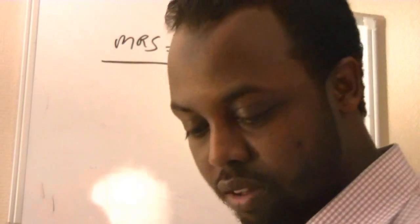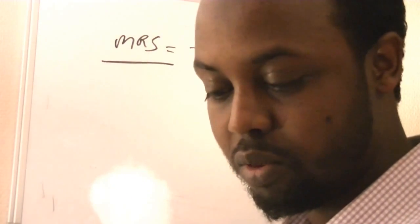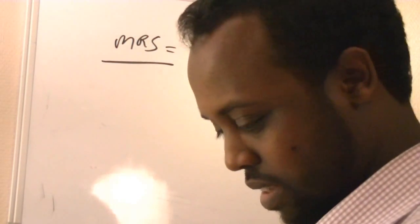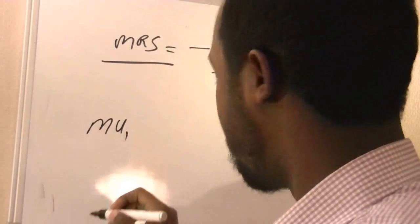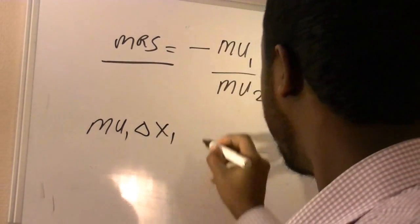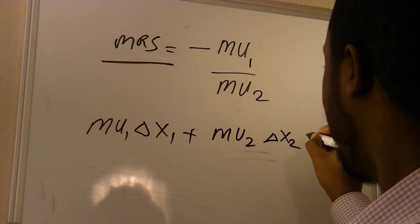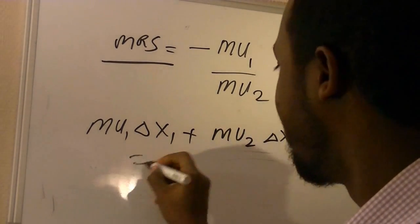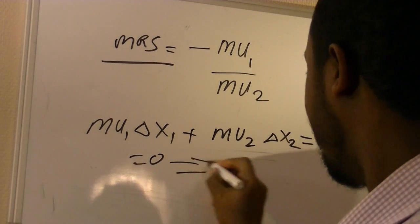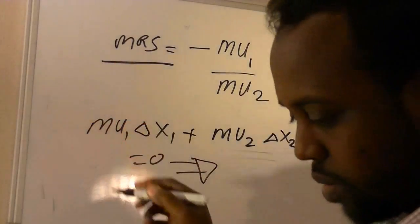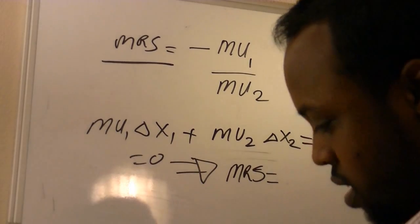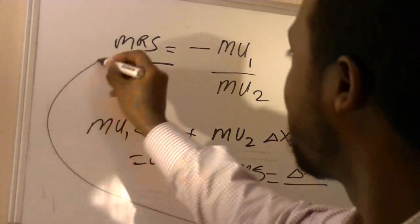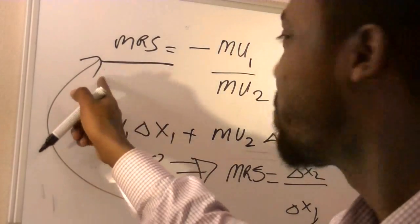In the case of utility, the MRS is the rate at which a consumer is just willing to substitute a small amount of good two for good one. A simple way to calculate this: marginal utility of good one times the change in that good, plus marginal utility of good two times the change in that good, gives us the change in utility — which on an indifference curve is zero. This leads to the MRS formula: the change in x₂ divided by the change in x₁.